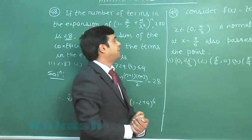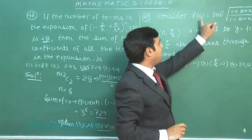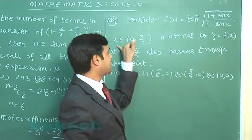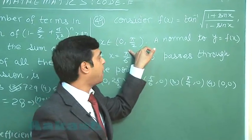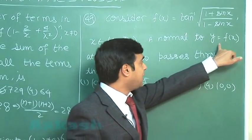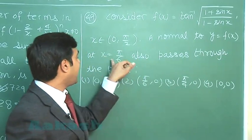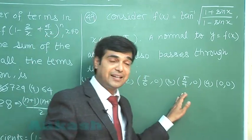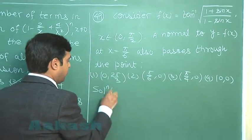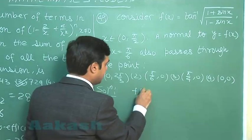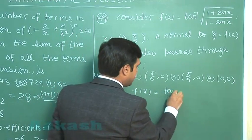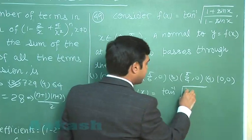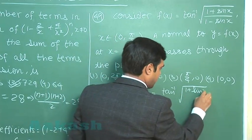Next, question 49: consider f(x) equals tan inverse of root[(1 + sin x)/(1 - sin x)], where x is in the interval 0 to π/2. A normal to y equals f(x) at x equals π/6 also passes through a given point. First, let us simplify f(x).